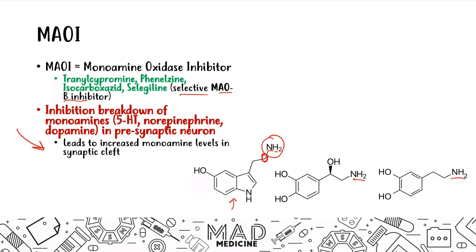The end product is the same whether you're using SSRIs, SNRIs, MAOIs, or TCAs. The difference is that SSRIs, SNRIs, and TCAs decrease reuptake of serotonin and/or norepinephrine, whereas MAOIs don't block reuptake — they block the breakdown. MAOIs inhibit monoamine oxidase, the enzyme that oxidizes and inactivates these monoamines.